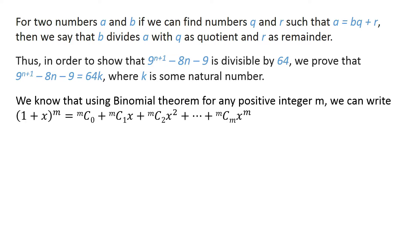We know that using the binomial theorem, for any positive integer m, we can write (1 + x) raised to the power m equals m choose 0, plus m choose 1 times x, plus m choose 2 times x raised to the power 2, and so on, plus m choose m times x raised to the power m.